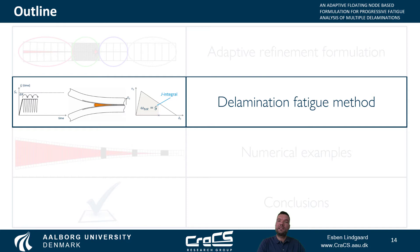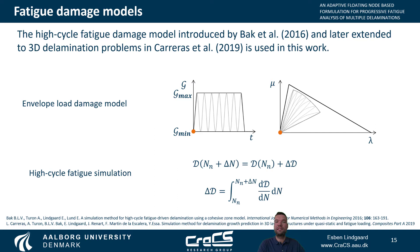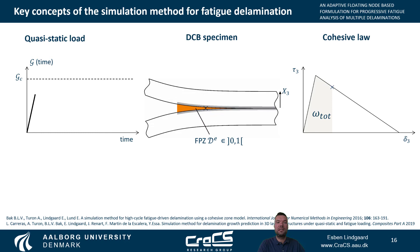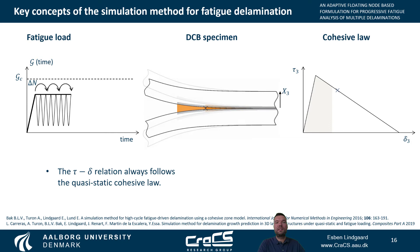Let me now briefly outline the delamination fatigue method we use in this work. We use the high-cycle fatigue model introduced in 2016 and recently extended to 3D delamination cases. It is an envelope load approach, and at every cycle jump, the damage state is updated by integrating the damage rate over the elapsed number of cycles. Schematically, we start from an unloaded state and monitor the cohesive state of a point in the DCB specimen. We load quasi-statically to a sub-critical loading state, and the interface becomes partly damaged at the marked point.